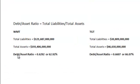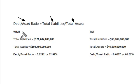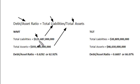I have written out the actual debt-to-asset ratio and shown you the formula: total liabilities divided by total assets. Looking at Walmart, we take that 121.7 billion of total liabilities and divide it by total assets of 193.4 billion. So 121.687 billion divided by 193.406 billion gives us a debt-to-asset ratio of 0.6292.